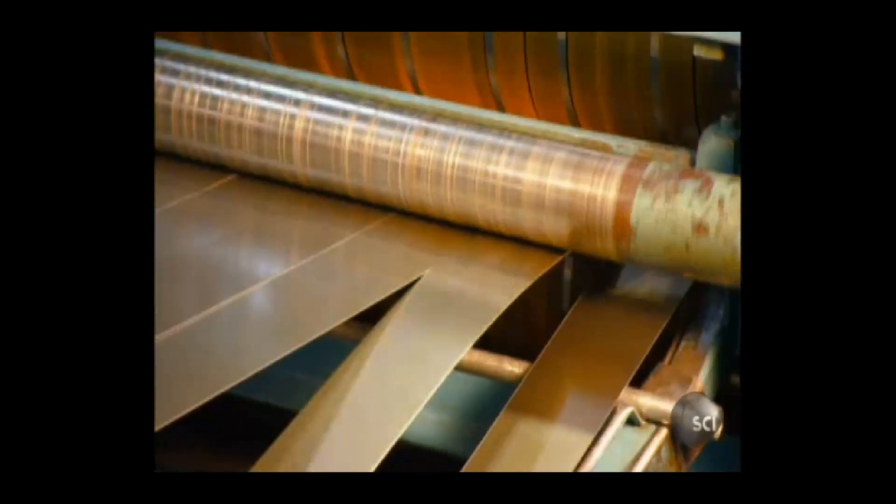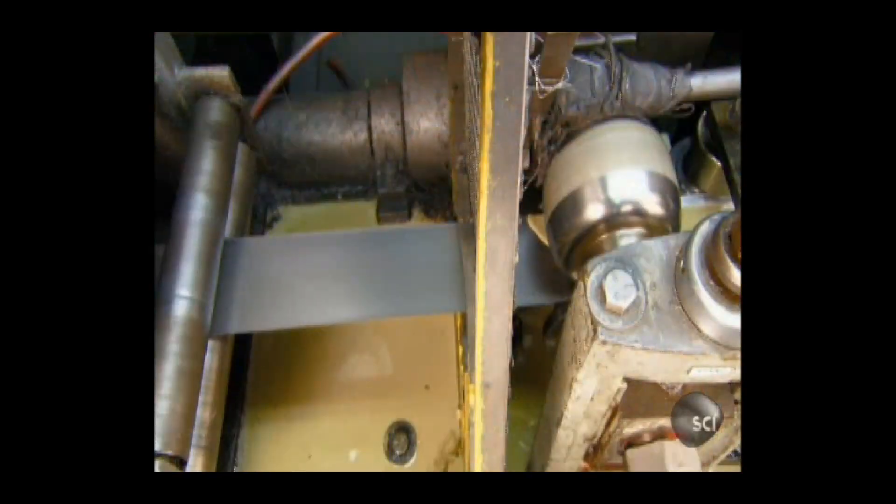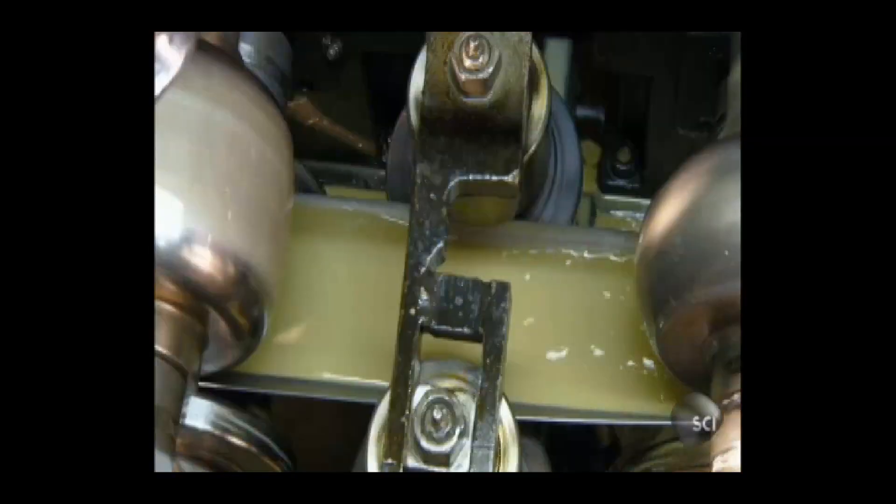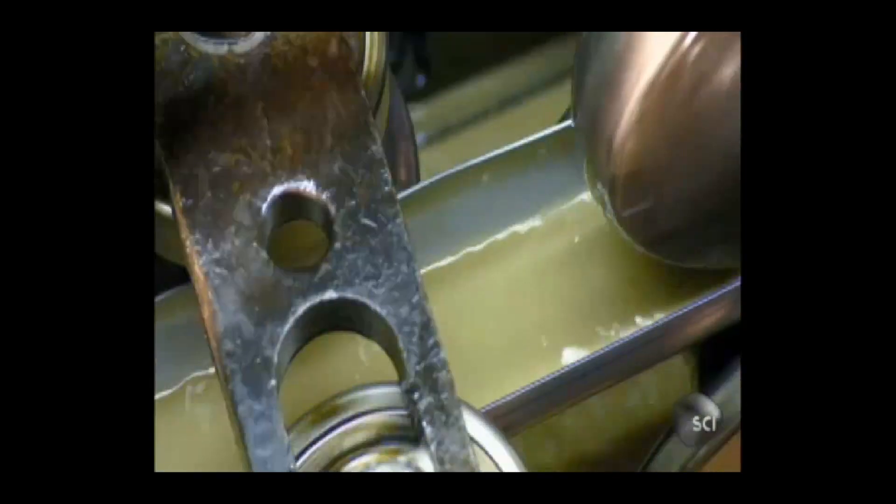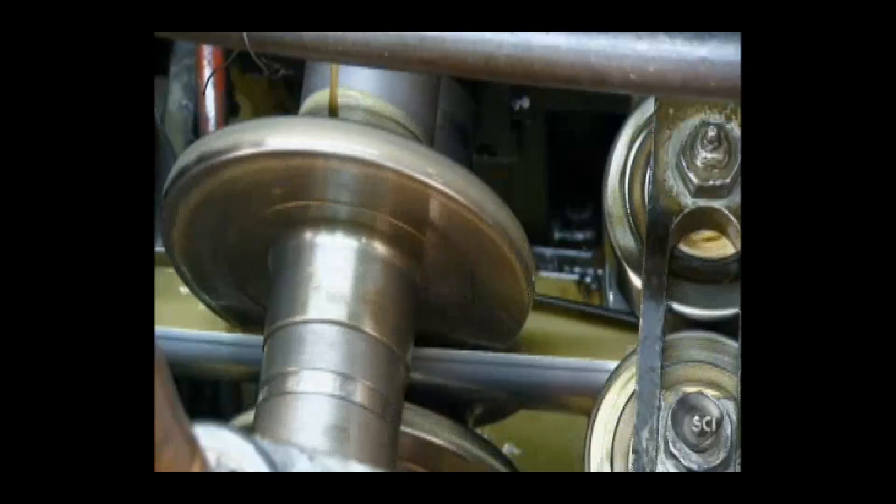Both of these tubes are made from a steel sheet sliced into strips. Inside this tube mill, coolant prevents the passing strip from overheating as one forming roller after another gradually rounds it into a tube.